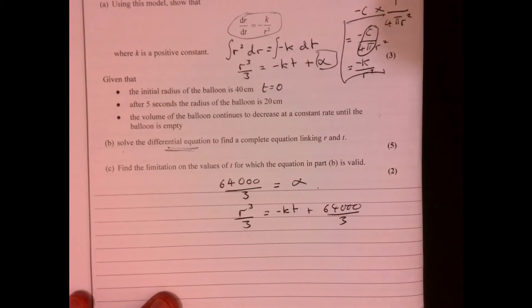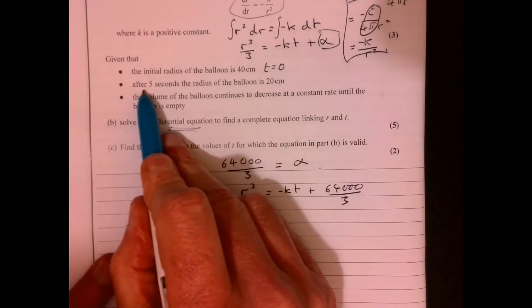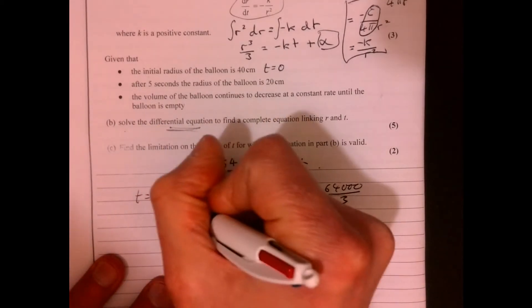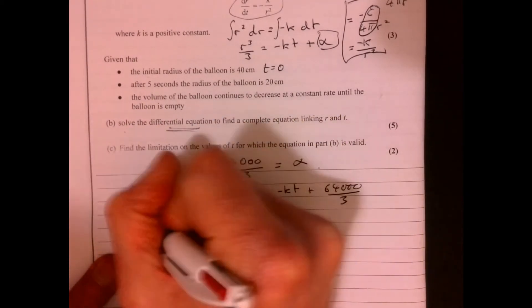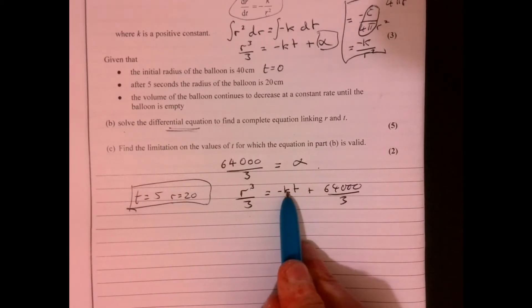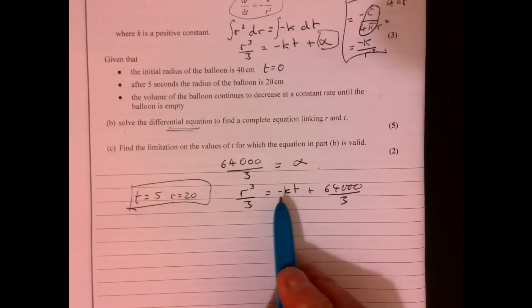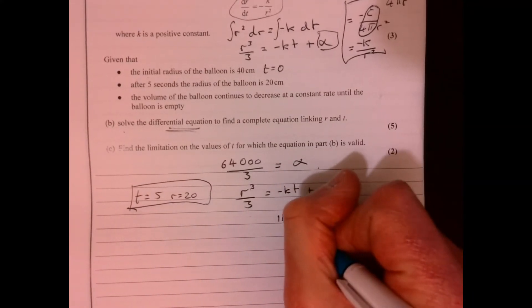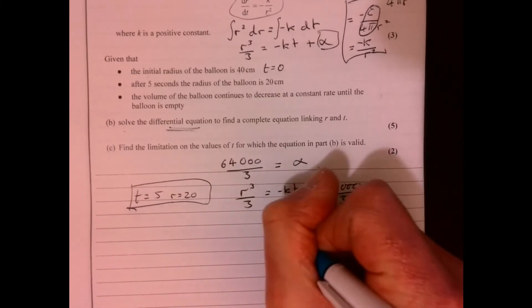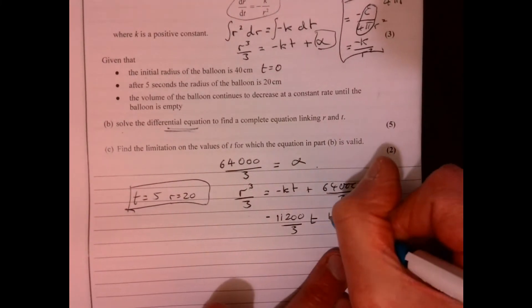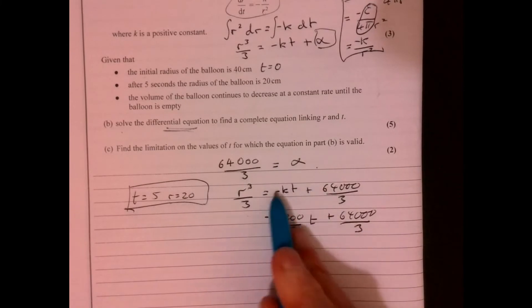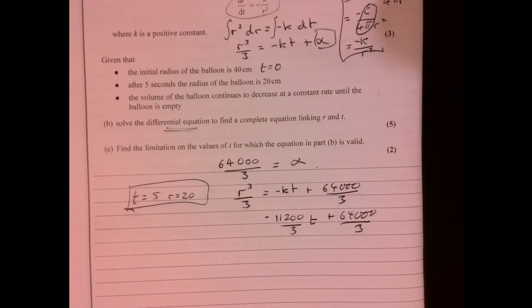So we're nearly there now. The other bit of information we were told is that t is 5, r is 20. So if we just plug these in now, what that's going to allow us to do is work out this k value over here. And if we do that, then we get k there to be 1120. I'll stop missing a little step there. All I've done is I've just substituted these numbers in here and then we can find out what k value is.